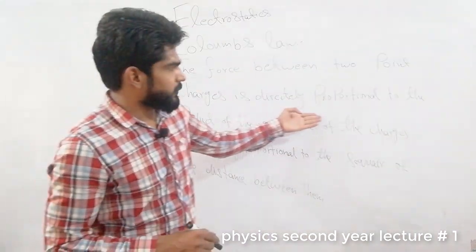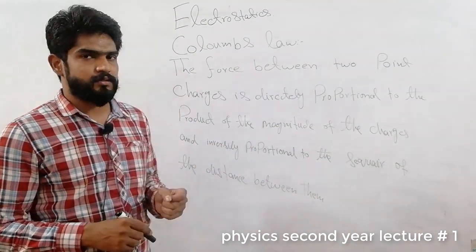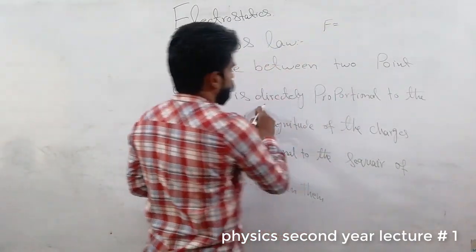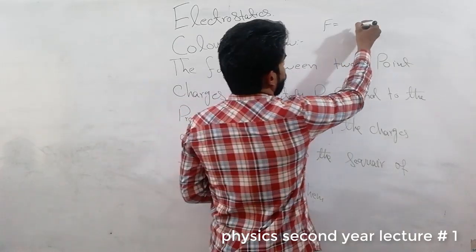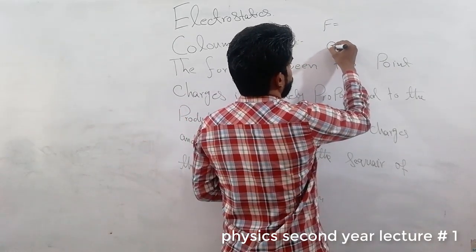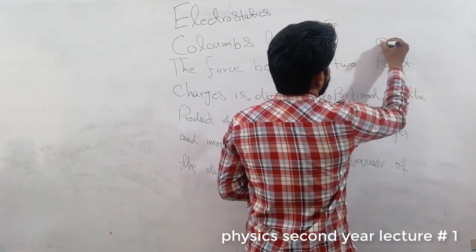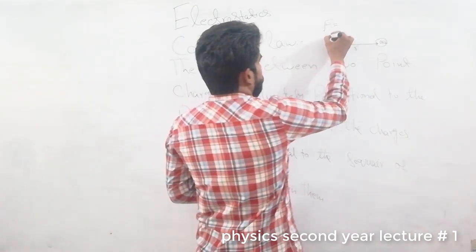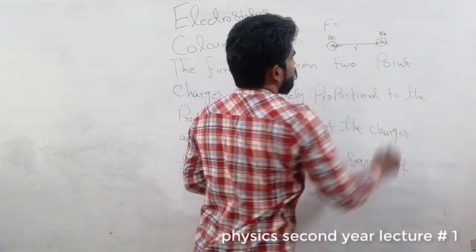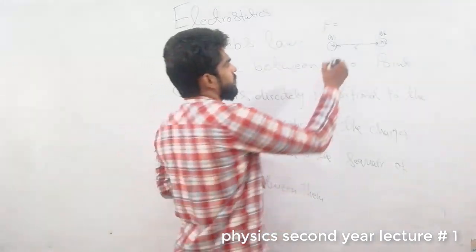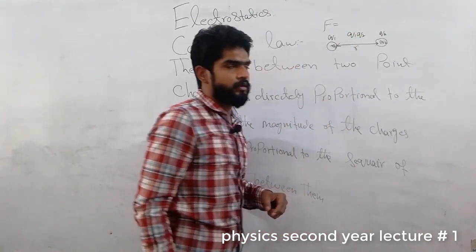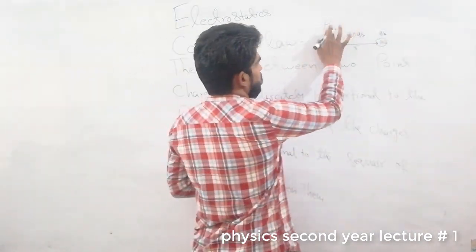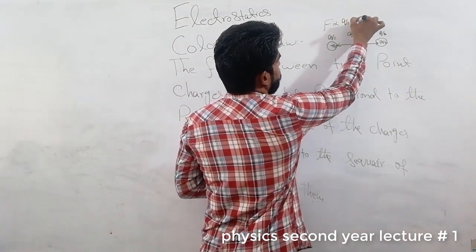The first part says the force is directly proportional to the magnitude of the charges. The second part involves the distance between them. So the force is directly proportional to the product of the magnitudes, meaning force is proportional to Q1 and Q2.